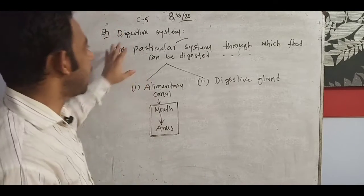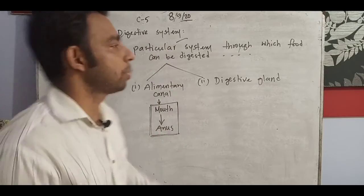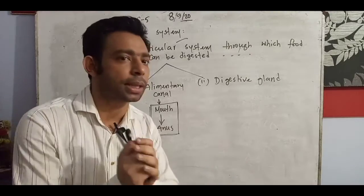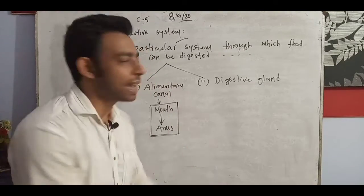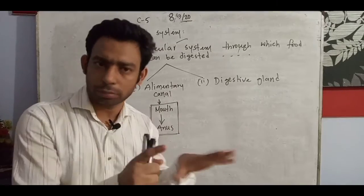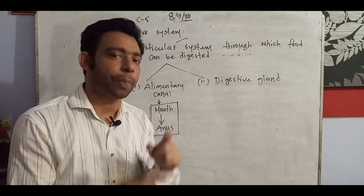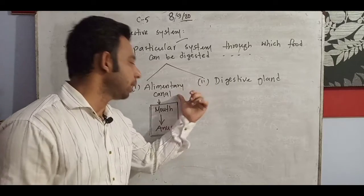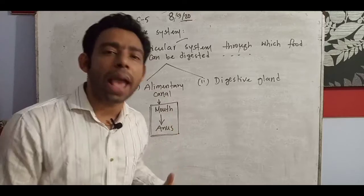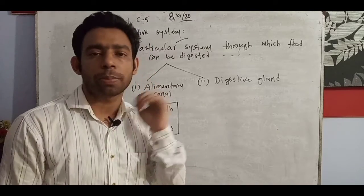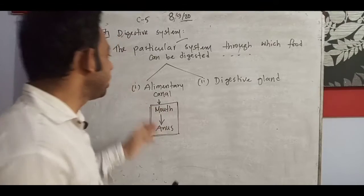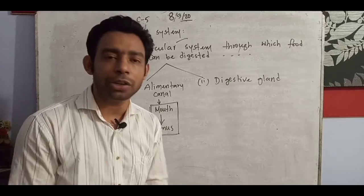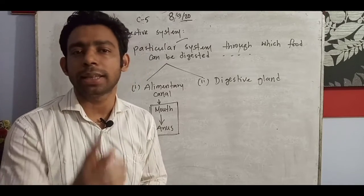We know that digestion is when food breaks down into the smallest form. The digestive system is that particular system which conducts digestion. The two important parts of the digestive system are the alimentary canal, which is present from mouth to anus, and the digestive glands, of which there are many different kinds. We will try to understand all of them, starting with the alimentary canal.